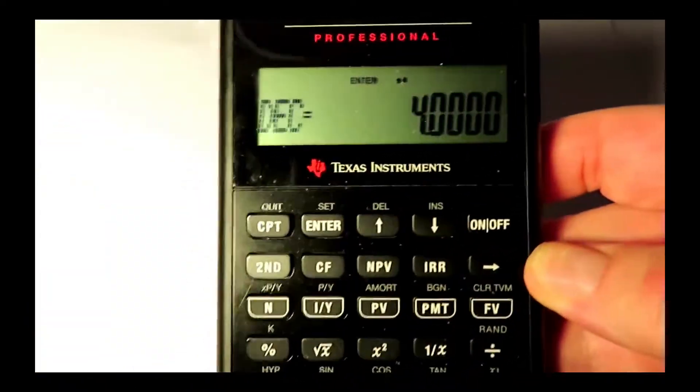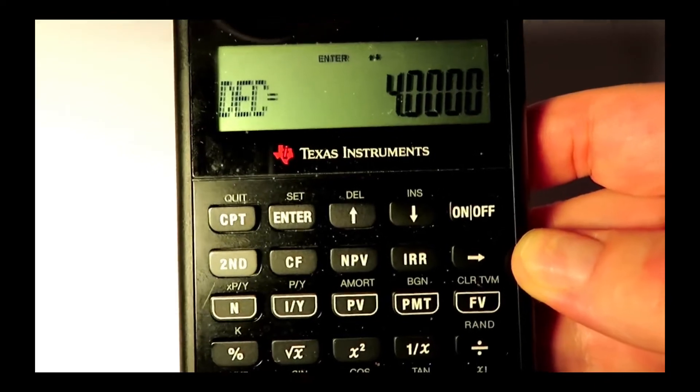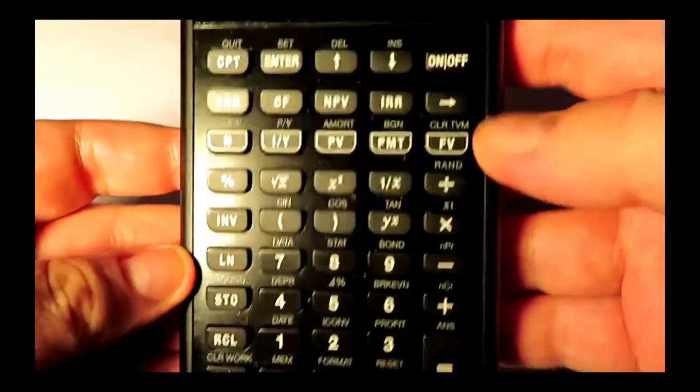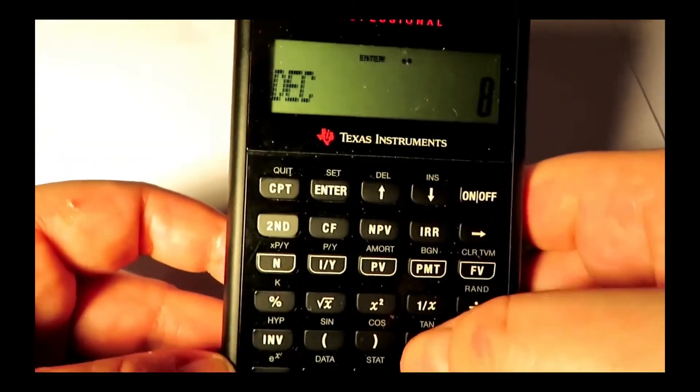And here we have the display, which says DEC4, which means we currently have four decimal places. Now next up, we're going to choose how many decimal places we want. Let's say we want eight, so we push eight.